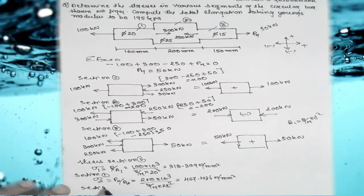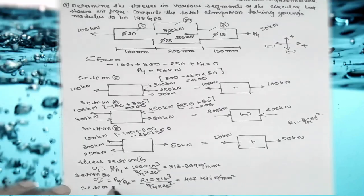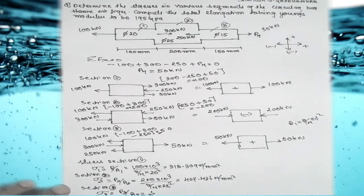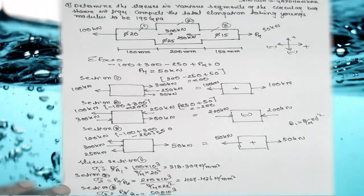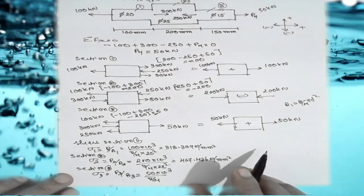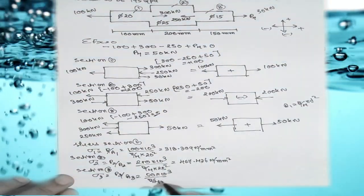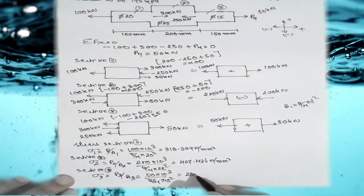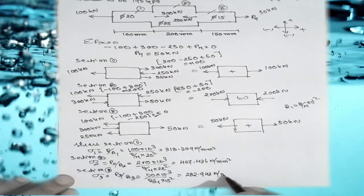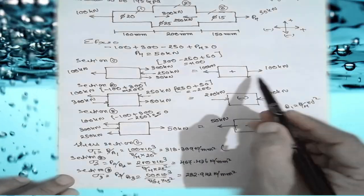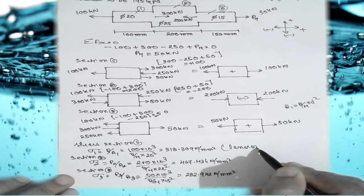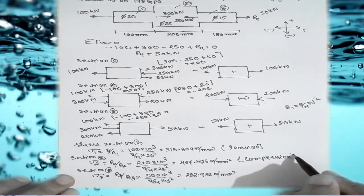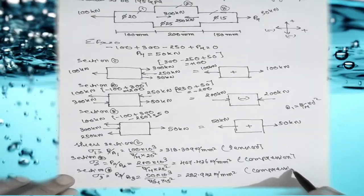Section 3: σ3 = P3/A3 = (50×10³) / (π/4 × 15²) = 282.942 N/mm². As per the diagram, section 1 is tension, section 2 is compression, and section 3 is tension. Sections 2 is in compression.